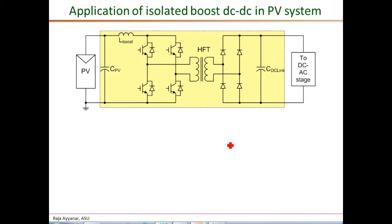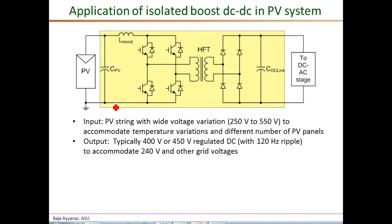In a PV inverter application, the input PV voltage can have a wide variation from 200 to 550 volts. This wide range is needed to support many different configurations and numbers of PV panels connected in series. Also, for a given system with a given number of panels, the voltage is a strong function of temperature.